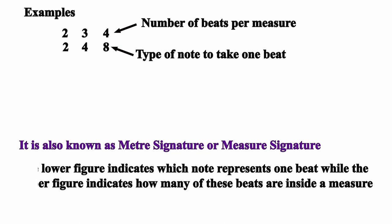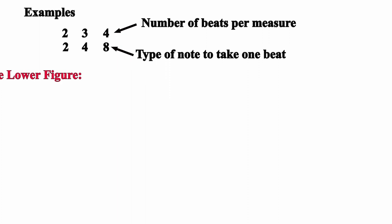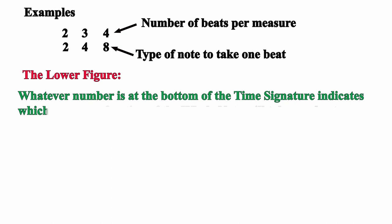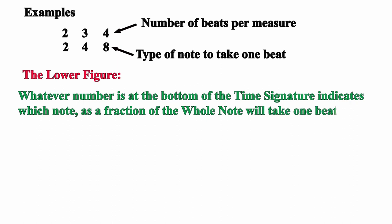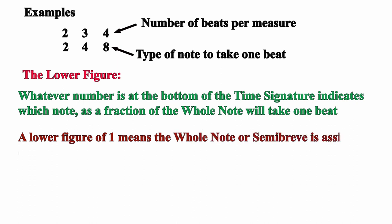Now let's talk about the lower figure. Recall that the semibreve is the whole note and other notes are fractions of it. A crotchet is one quarter of a whole note and hence is called a quarter note. Whatever number is at the bottom of the time signature indicates which note, as a fraction of the whole note, will take one beat. A lower figure of 1 means the whole note itself is assigned one beat — for example, 4 1 or 3 1 — although this is not in common usage.